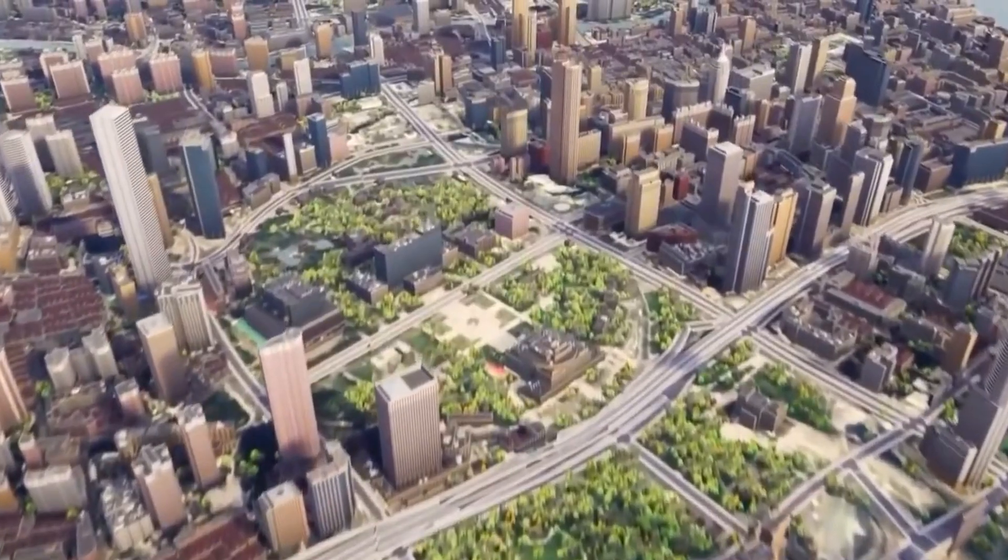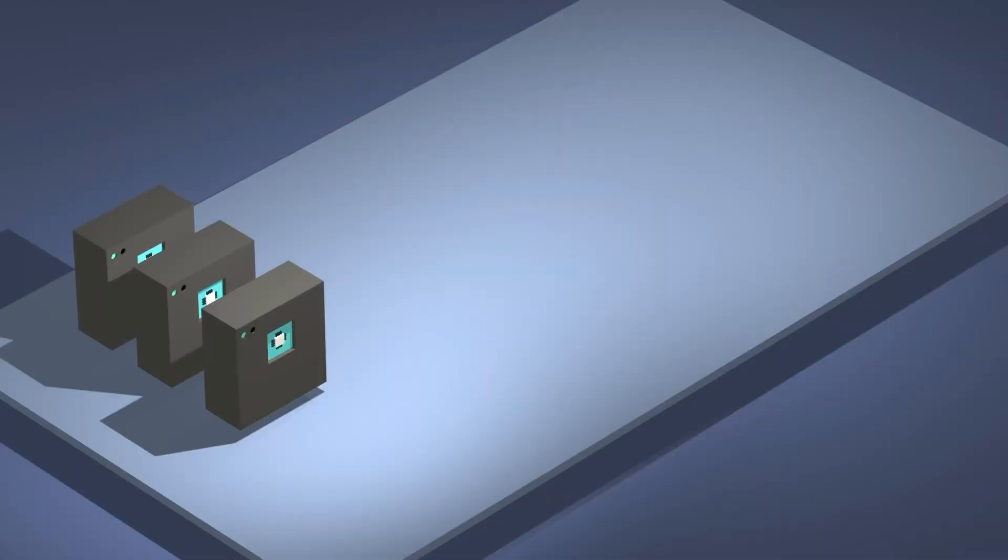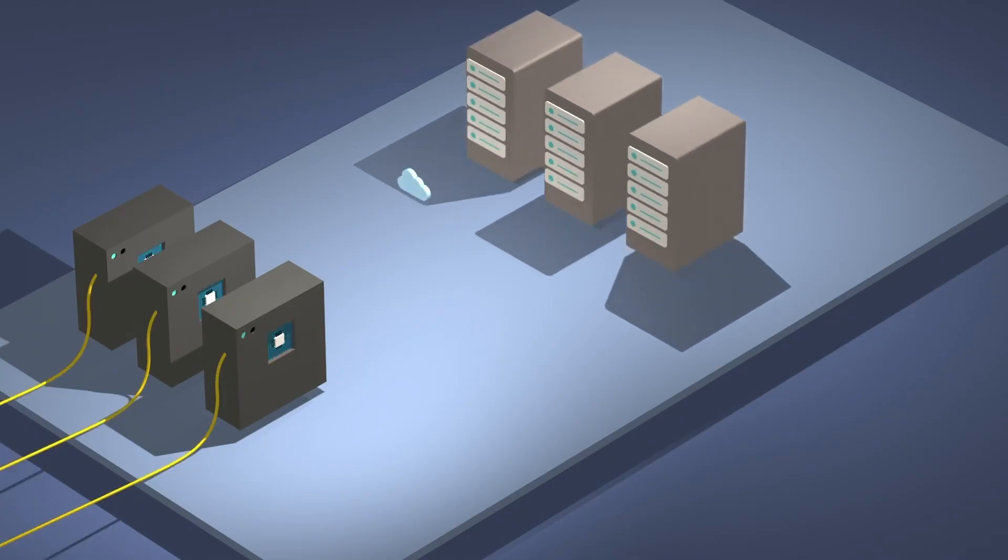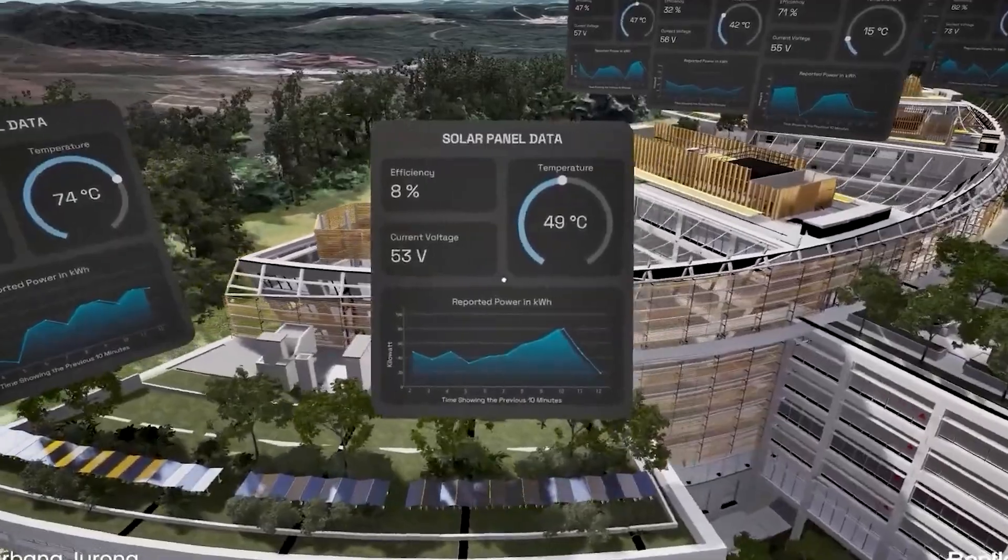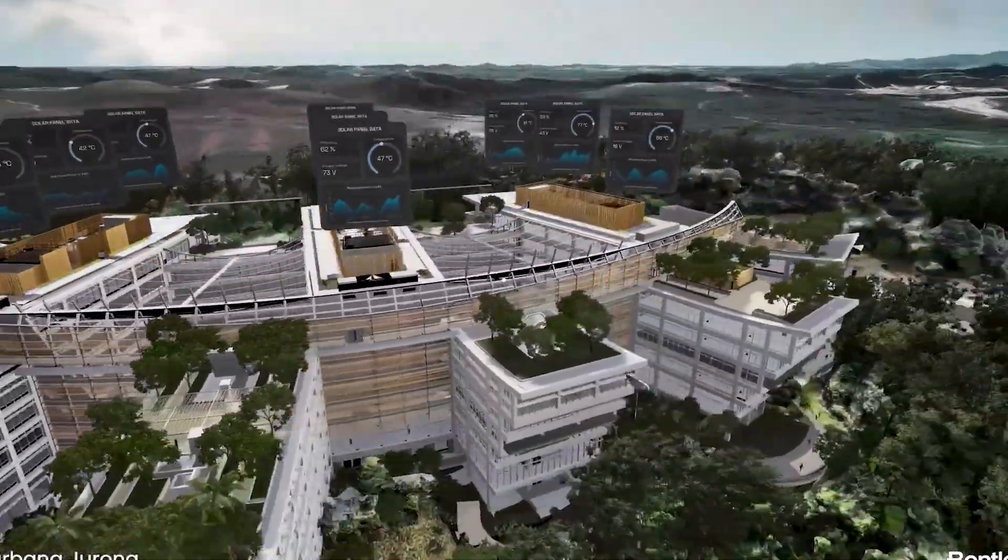For consumers, this translates to fewer product shortages, smoother deliveries, and critical systems that don't fail when needed most. For industries, it means operational efficiencies that were literally impossible before ubiquitous connectivity and distributed intelligence became technological reality.